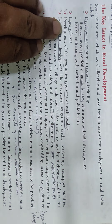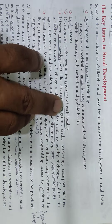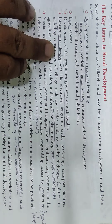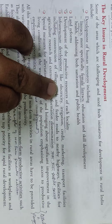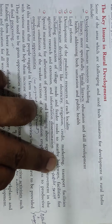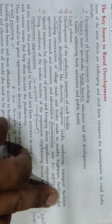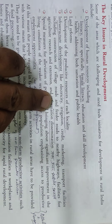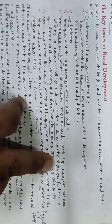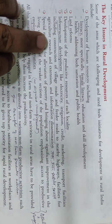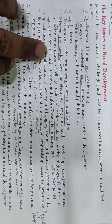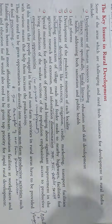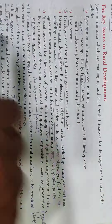Next is Development of the Productive Resources of Each Locality. Infrastructure Development like electricity, irrigation, credit, marketing, and transport facilities including construction of village roads and feeder roads to nearby highways. Also, facilities for agricultural research and extension, and information dissemination.